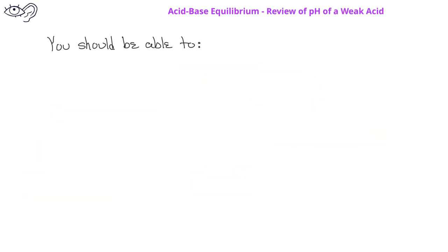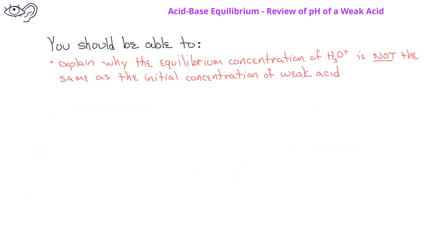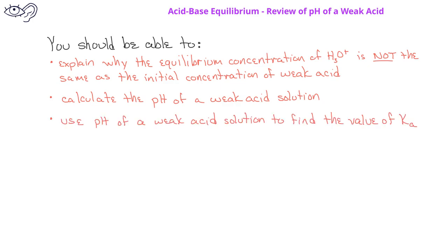By now, you should be able to explain why the equilibrium concentration of the hydronium ion is not the same as the initial concentration of the weak acid. You should also be able to calculate the pH of a weak acid in aqueous solution if you are given the acid ionization constant value. Finally, you should be able to use the pH and the initial concentration of a weak acid to find the Ka for a weak acid.